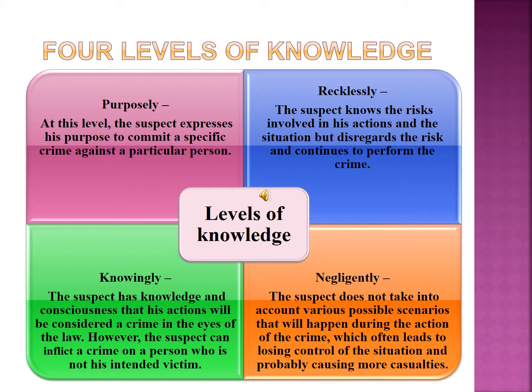The four levels of knowledge: First is purposely — the suspect expresses his purpose to commit a specific crime against a particular person; the purpose, specific crime, and victim are all clear. Second is recklessly — the suspect knows the risk involved in his actions and the situation but disregards the risk and continues to perform the crime. For example, if a bus driver is aware of a problem with the bus but still takes the decision to drive and meets with an accident, it comes under recklessly.